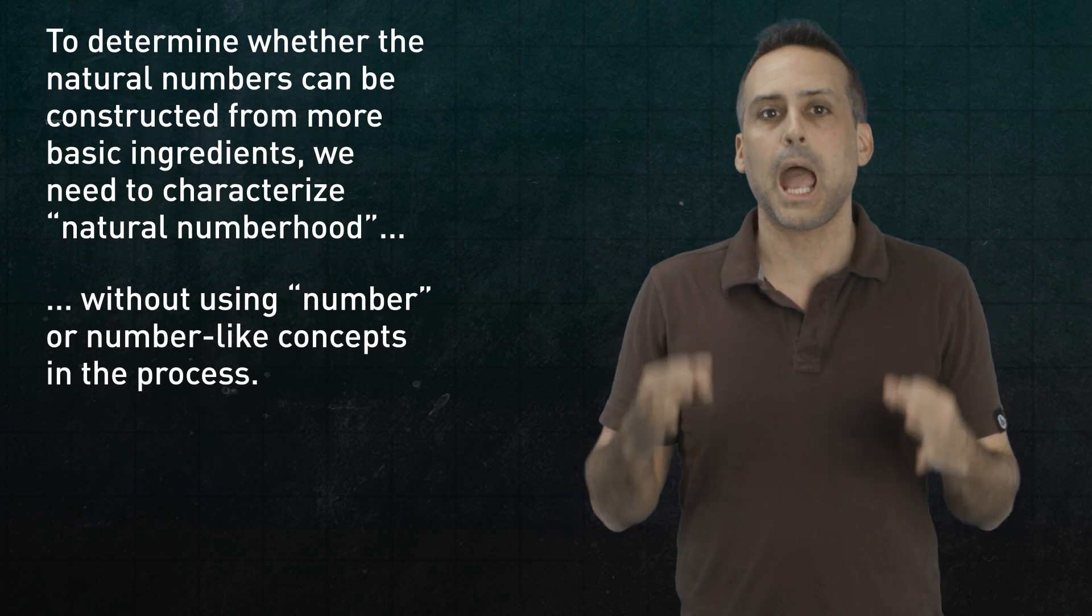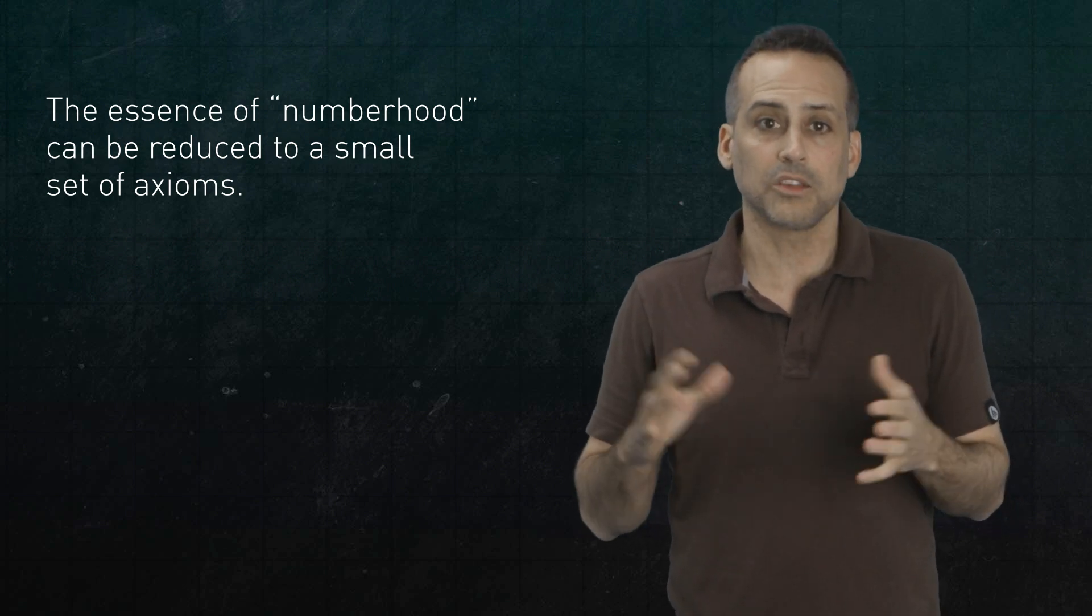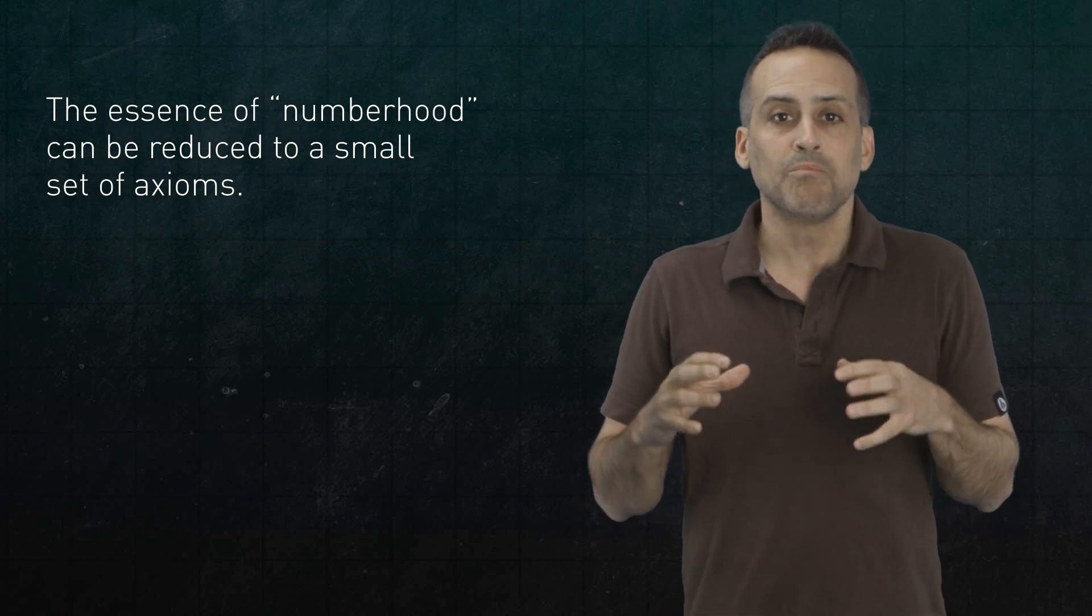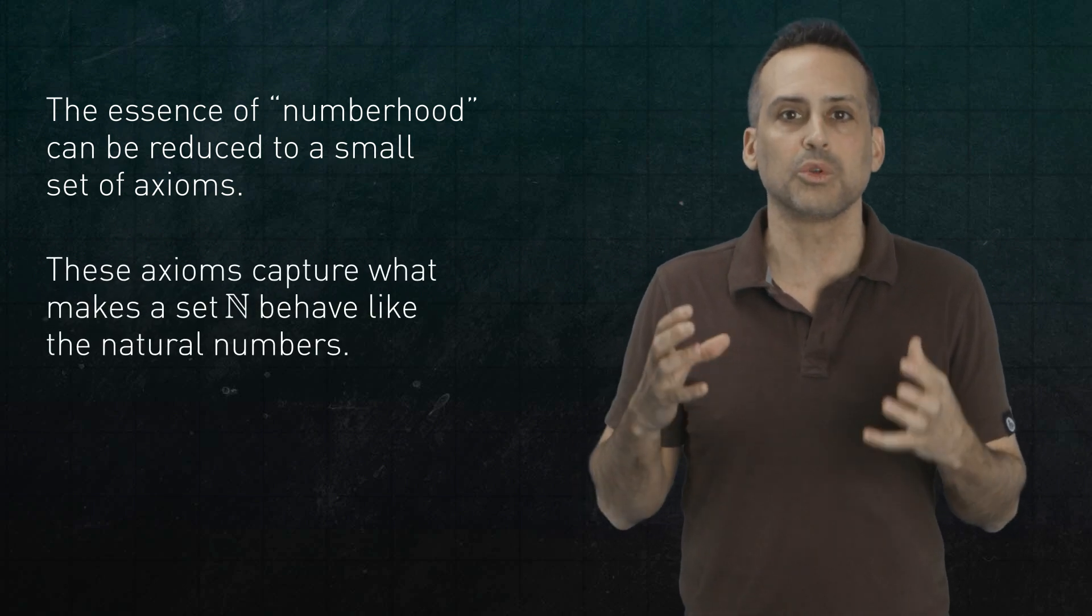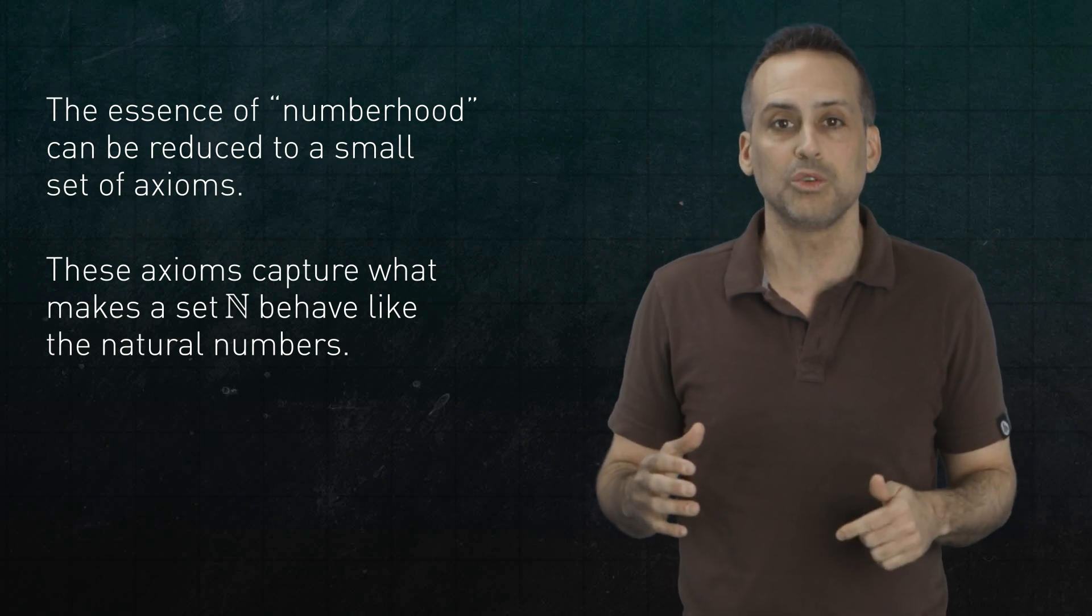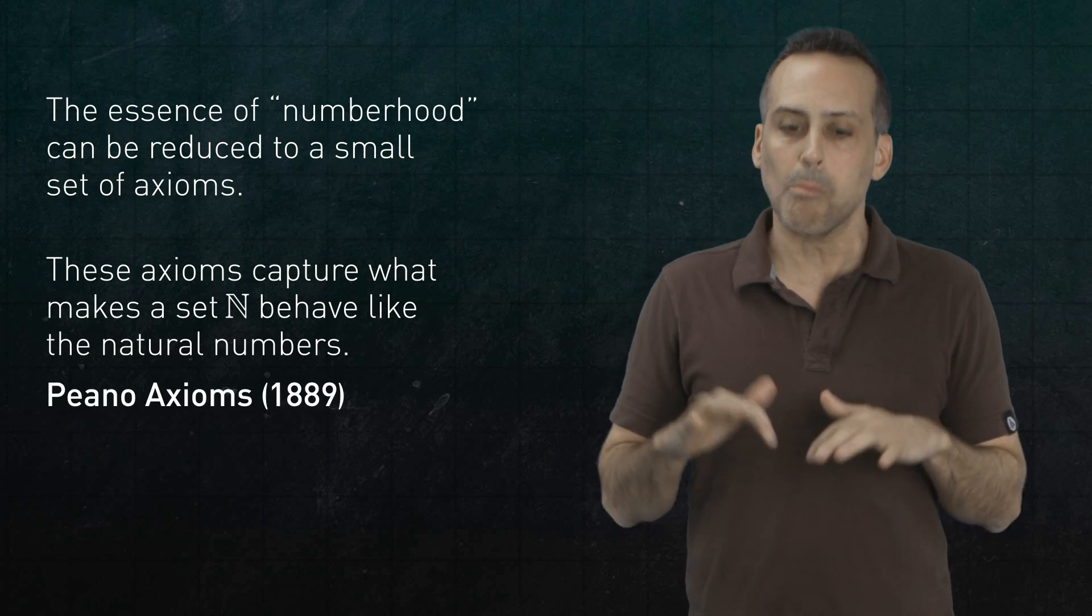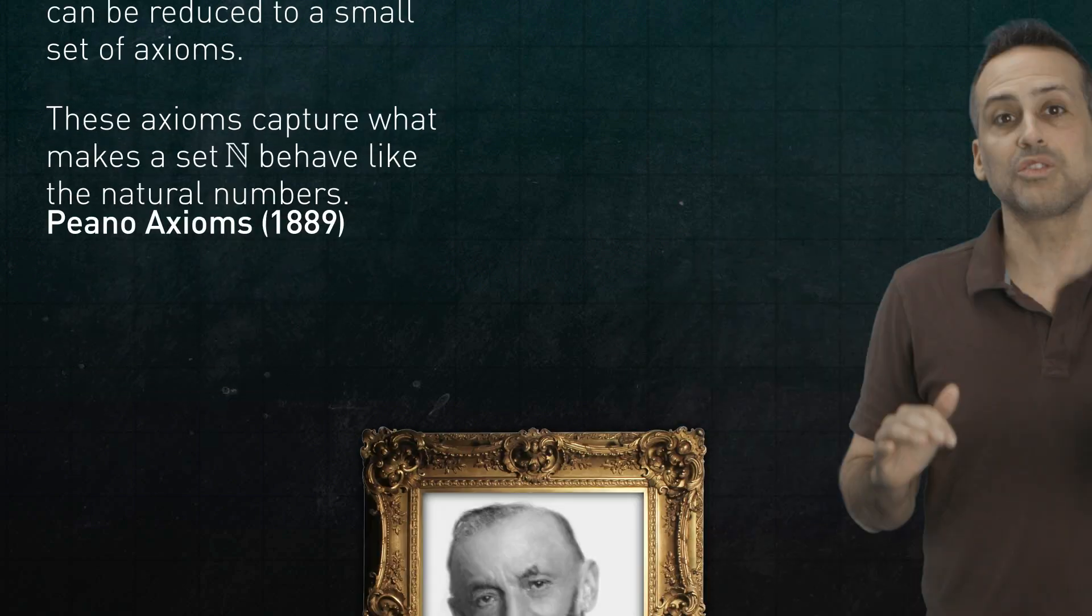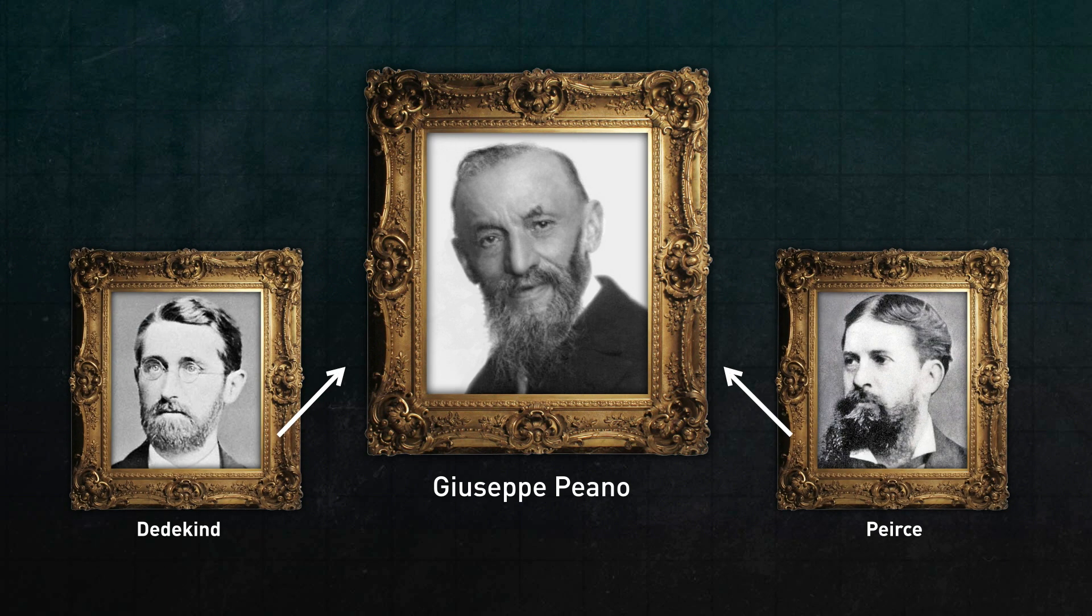Now it turns out that you can capture the essence of number hood in a small set of axioms, analogous to Euclid's axioms in geometry, that will allow us to build a set n that behaves just like the natural numbers, without ever explicitly mentioning numbers or counting or arithmetic as we do so. These axioms were first published in 1889, more or less in their modern form by Giuseppe Peano, building on and integrating earlier work by Peirce and Dedekind.